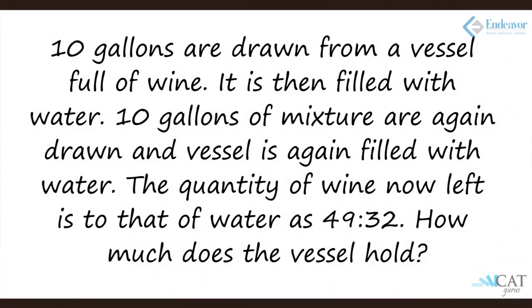Let us take an example on the replacement concept in Allegation and Mixture. In this situation, we have x gallons of wine in a particular container. We are supposed to remove 10 gallons of wine and replace it with water. This process is done twice. After 2 such processes, we are left with wine and water both in the container, and the proportion of wine to water is 49 to 32.